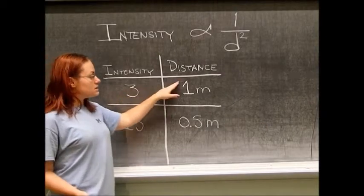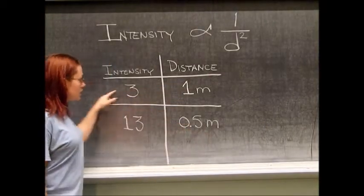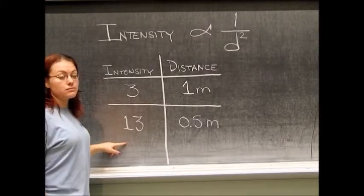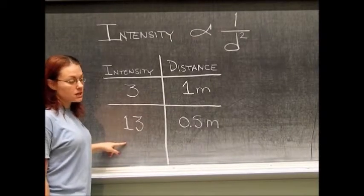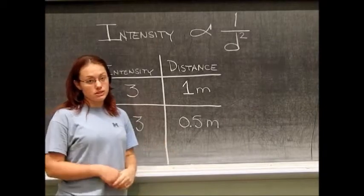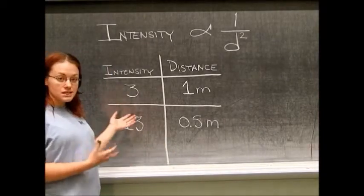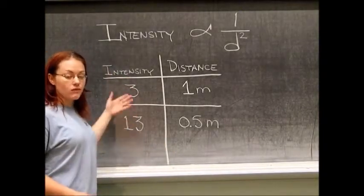When we decreased the distance by a half, we saw an increase in the intensity, which was approximately four times the amount, which is exactly what we should expect. Of course, this is an experiment, so it is not exactly four times, but it is relatively close within tolerable error.